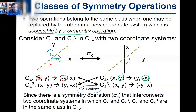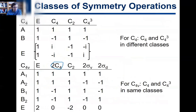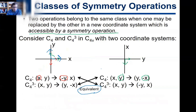Now think about the case for C4. All the math would be the same, but the problem is that in the C4 point group there is no sigma-d. That was one of the key differences between C4 and C4v. There's no mirror plane, no sigma-d in C4.